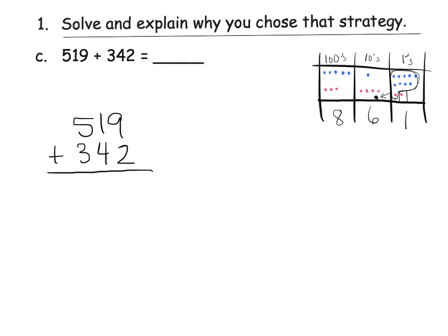9 ones plus 2 ones is 11, so that's 1 left over in the ones column, and we can bundle 10 of those together for a dot in the tens column. And then we have 10 plus 4 tens plus 1 ten, that equals 6 tens, and then we have 5 hundreds plus 3 hundreds gives us 8 hundreds.